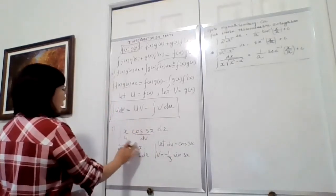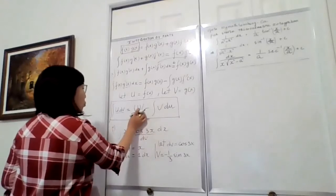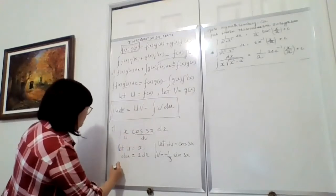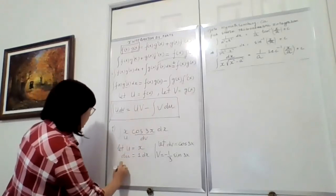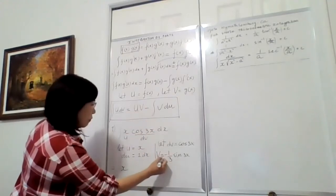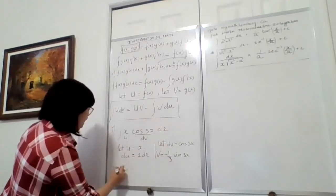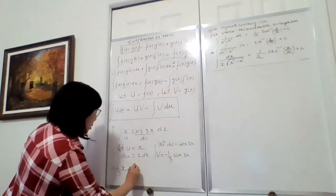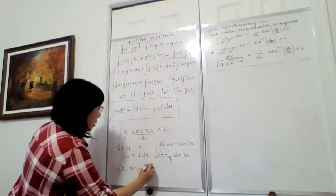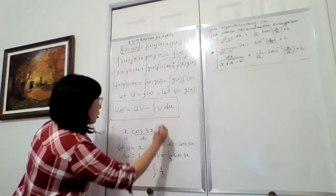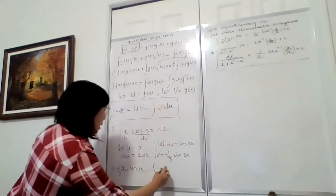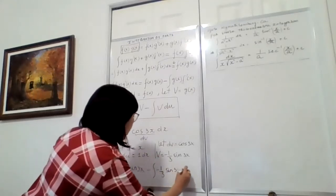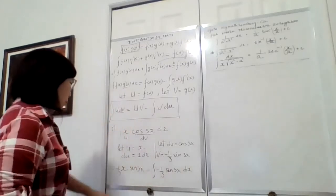Now following the formula ∫u dv = u·v − ∫v du: the integral becomes u times v, which is x times (−1/3)sin(3x), minus the integral of v times du. So v is −1/3 sin(3x) and du is 1·dx. That gives us −(1/3)x·sin(3x) minus the integral of −(1/3)sin(3x)dx.